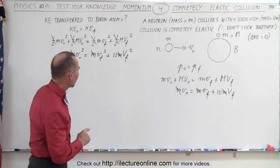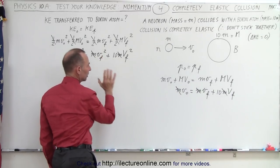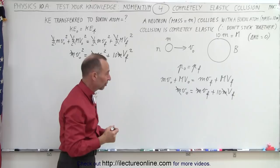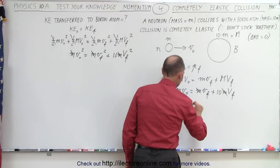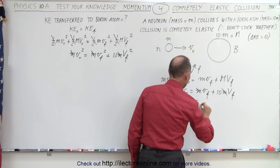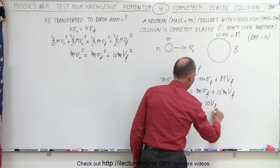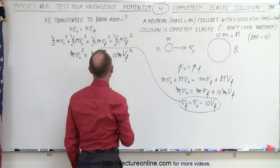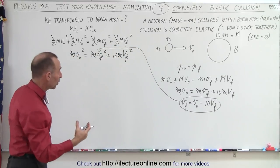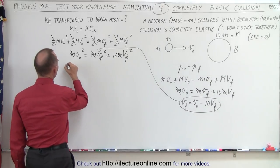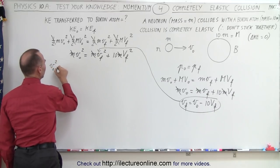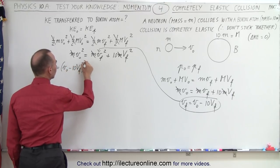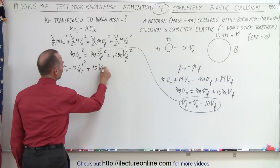The best approach, since we have 10 times V_final² and V_final² here, is to solve for V_final of the neutron from the momentum equation and plug that into the energy equation. So V_final of the neutron equals V_initial of the neutron minus 10 times V_final of the boron. Substituting that into the energy equation gives us a quadratic: V_initial² equals (V_initial minus 10·V_final)² plus 10·V_final².